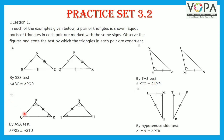Third, in triangle PQR and triangle STU, angle P is congruent to angle S, angle R is congruent to angle T, and the included side PR is congruent to the included side ST. Therefore, triangle PQR is congruent to triangle STU by ASA test.